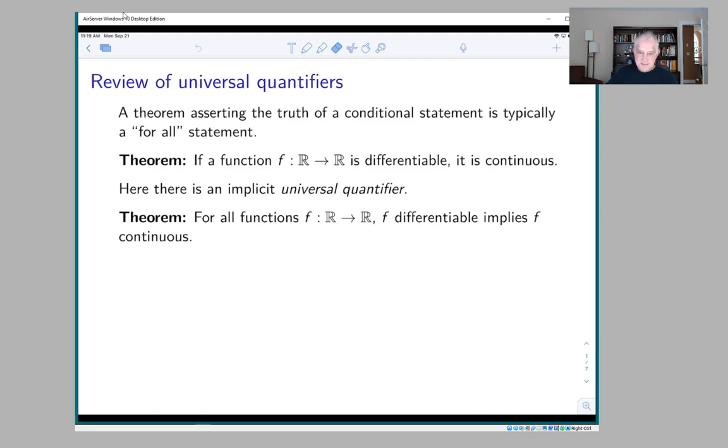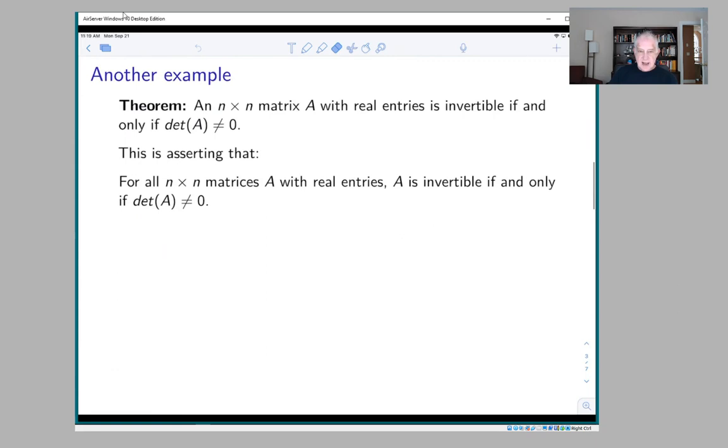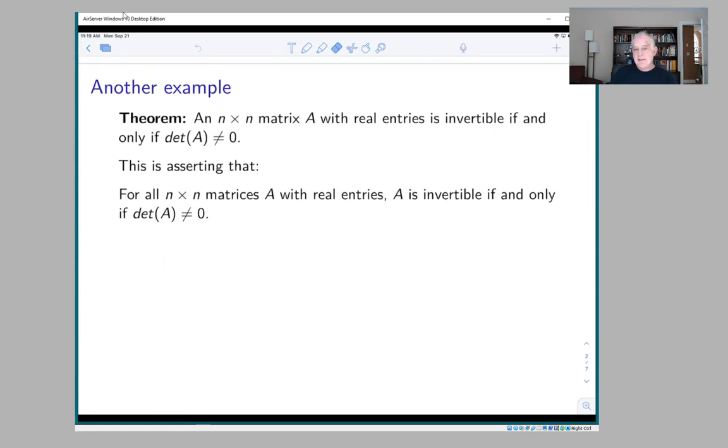Here's another example from linear algebra: an n by n matrix A with real entries is invertible if and only if its determinant is not zero. Again, we're saying for all n by n matrices A with real entries, A is invertible if and only if its determinant is not zero.